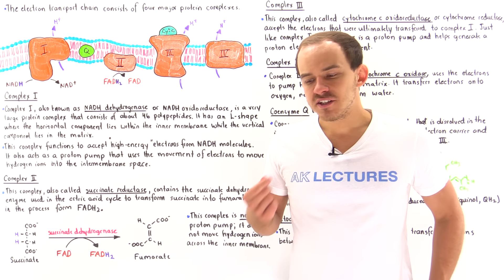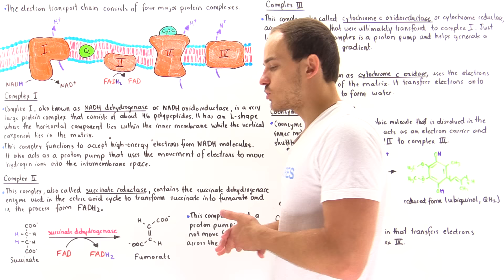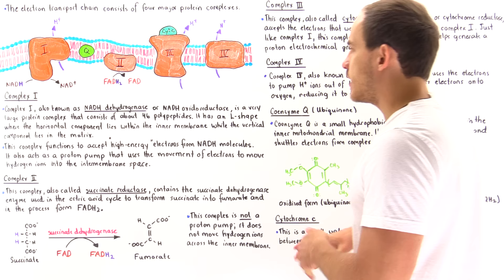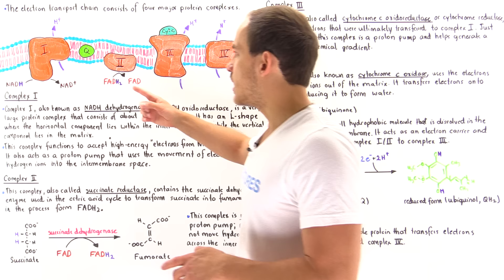Now that we have a general idea of what oxidative phosphorylation is and what the electron transport chain does, let's begin by discussing briefly the major types of complexes we find along the electron transport chain. We have four major types: protein complex 1, protein complex 2, protein complex 3, and protein complex 4.